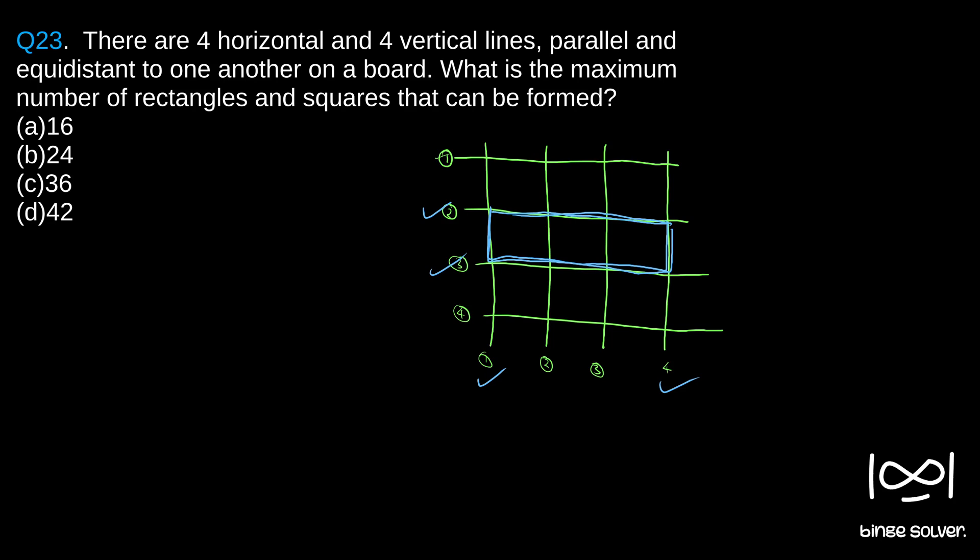Each combination will give a unique rectangle or square. If you know combinations, the answer will be very simple. The answer is how many ways we can select two horizontal lines - 4C2 ways, and how many ways we can select two vertical lines - 4C2 ways.